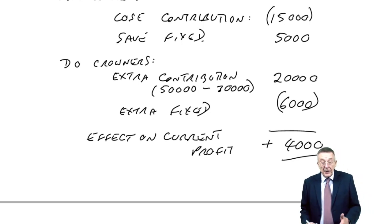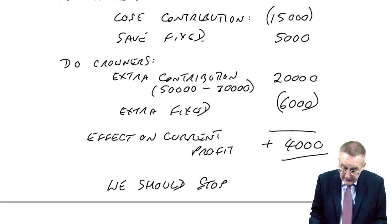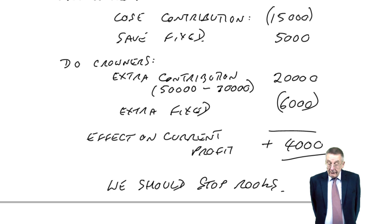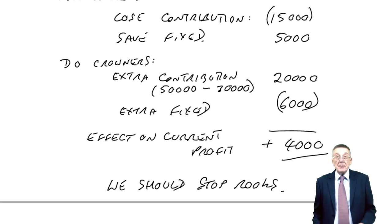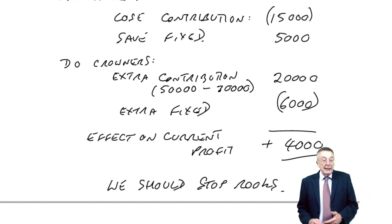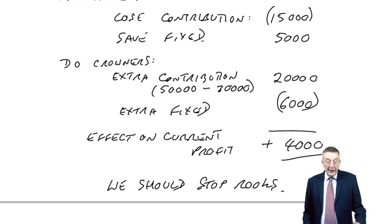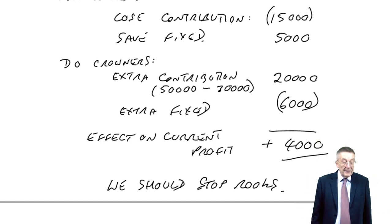The fact that profit is going up means we should stop rooks this time. This is always an area that's more likely to appear as an MCQ — a multiple choice question — even though there's not a lot involved. It takes a while to read and interpret, even though the arithmetic itself is quick.